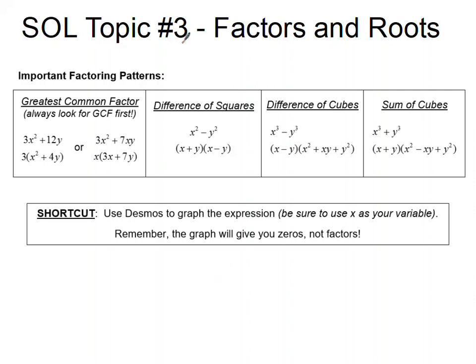Here is SOL topic number three: factors and roots. Let's look at some important factoring patterns. First, starting with the greatest common factor, or GCF. When we're factoring, we should always look for the GCF first. The GCF might be a number, a variable, or a combination of a number and some variables. It's a unique way of factoring because we pull out a monomial and we're left with one set of parentheses that has the factors that would remain.